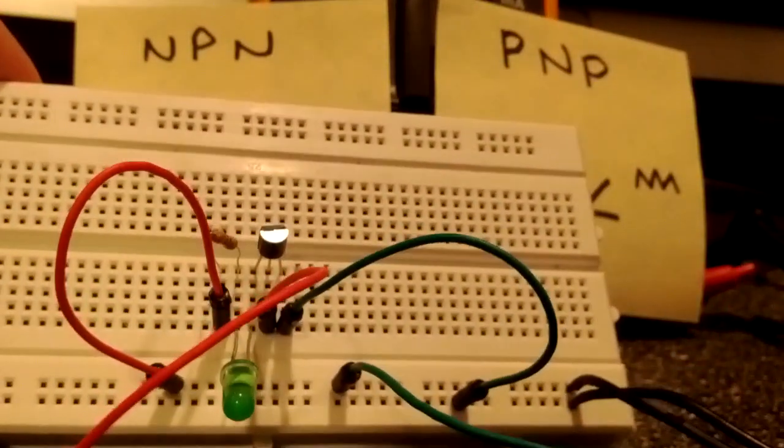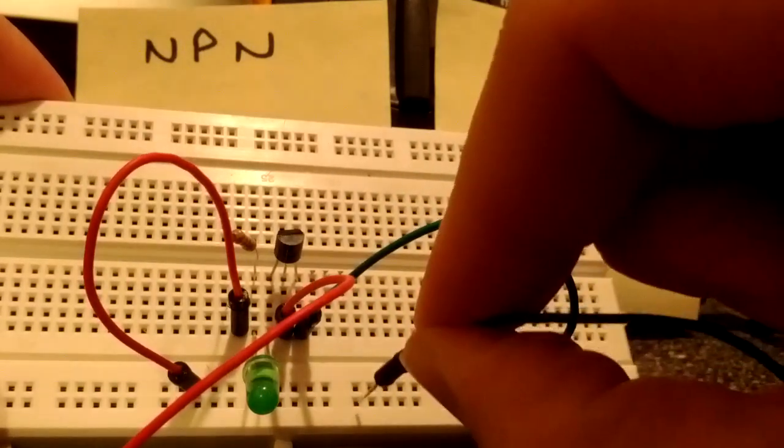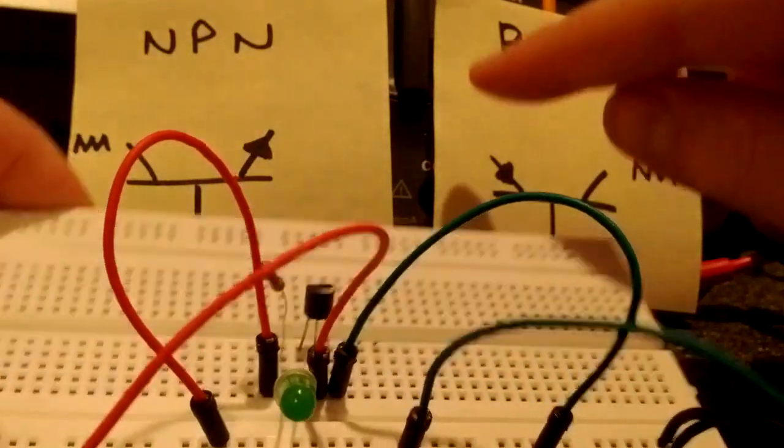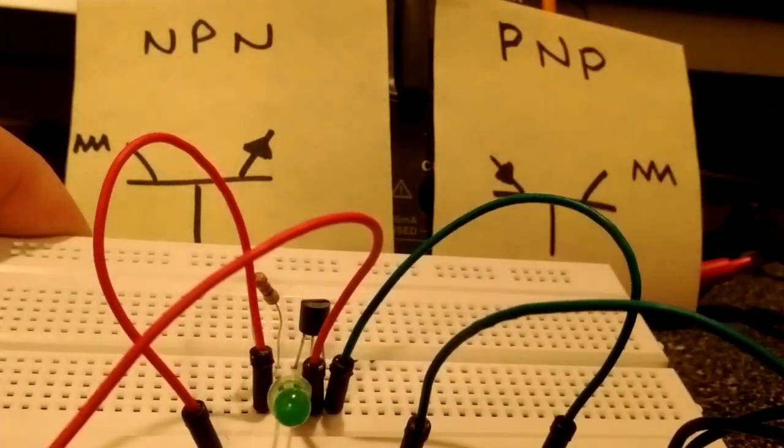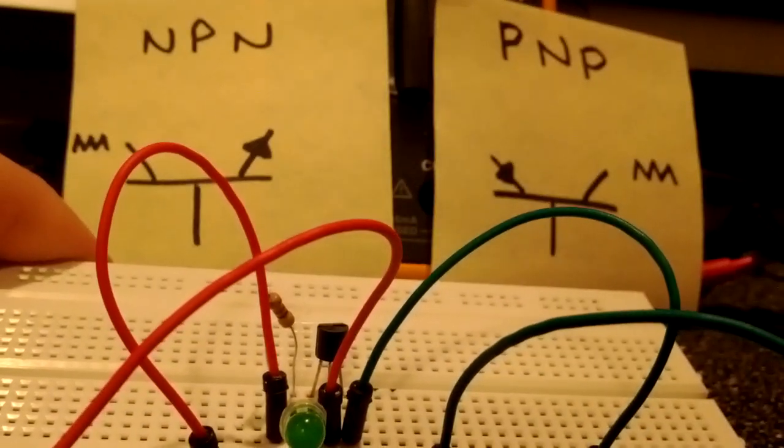The difference is that instead of using positive voltage signal, I'm going to use negative. So now I'm activating the collector emitter part of the transistor using a ground instead of using power. So I'm a sink. I'm a sinking sensor.